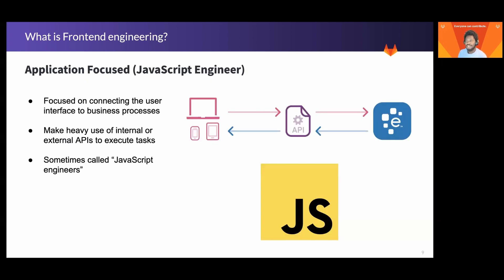Another type of front-end engineer is the application engineer. Typically these engineers focus on connecting user interfaces to business processes or goals. For example, a user interface that allows you to access your online banking details, view your statements, and query previous transactions. These engineers often need to consume data from backend APIs or other data sources, making use of common or shared components developed by UI engineers, composing them together on the screen to complete a specific feature or task, while also working closely with backend engineers to ensure the relevant API endpoints and data are available.